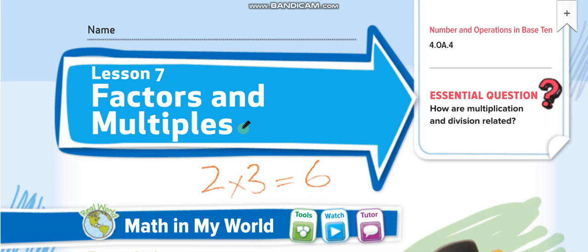So in this lesson they will ask you, for example, give the factors of 6. You can say 1 times 6 is a factor pair of 6, and 2 times 3 is a factor pair of 6. You can also write the opposites: 6 times 1, or 3 times 2.